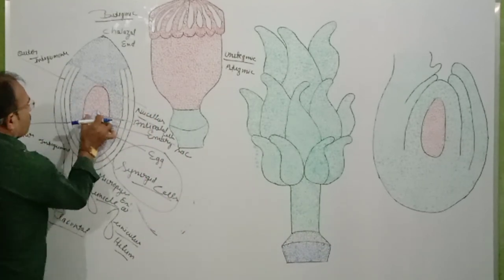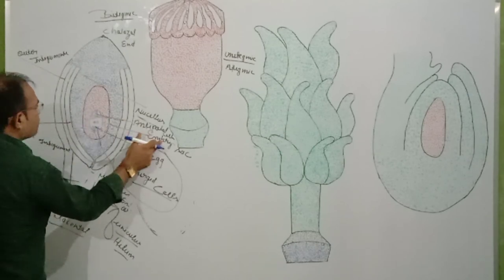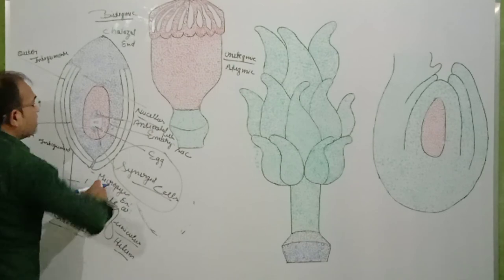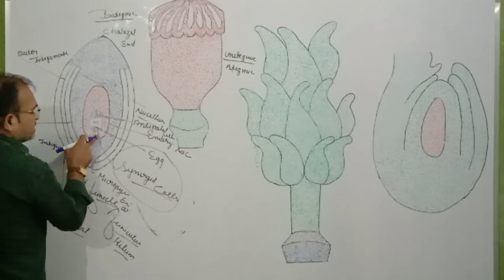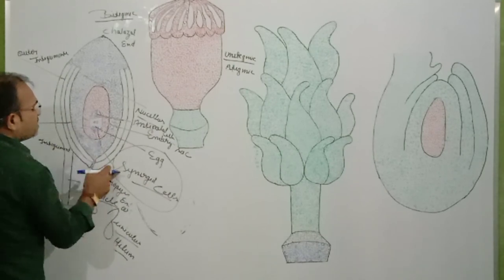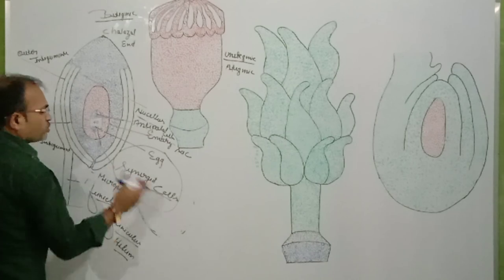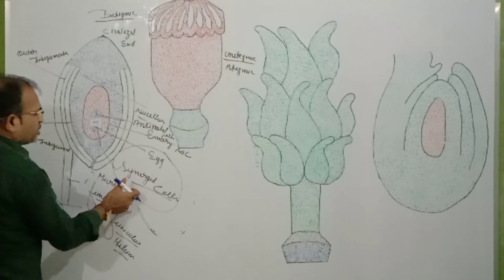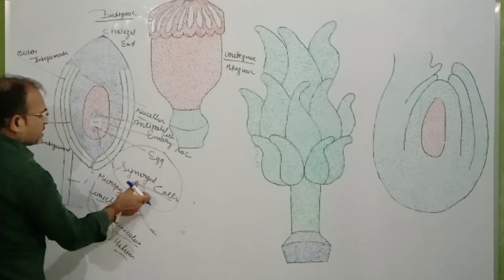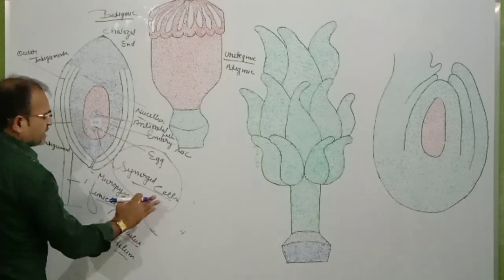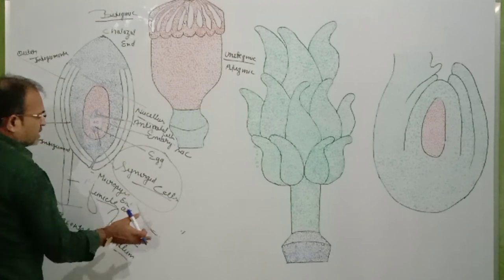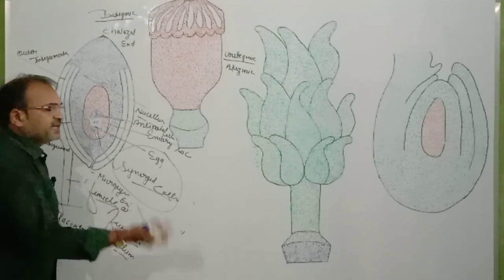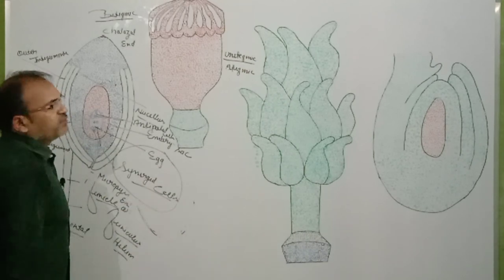Inside, there are parenchymatous cells at the top called antipodal cells. In the center are two polar nuclei. Near the micropylar end, on the left and right, are synergid cells — also called helping cells — and in the center is the egg cell. These three cells together — egg cell and synergid cells — are called the egg apparatus. After fertilization, the ovule converts into the seed.